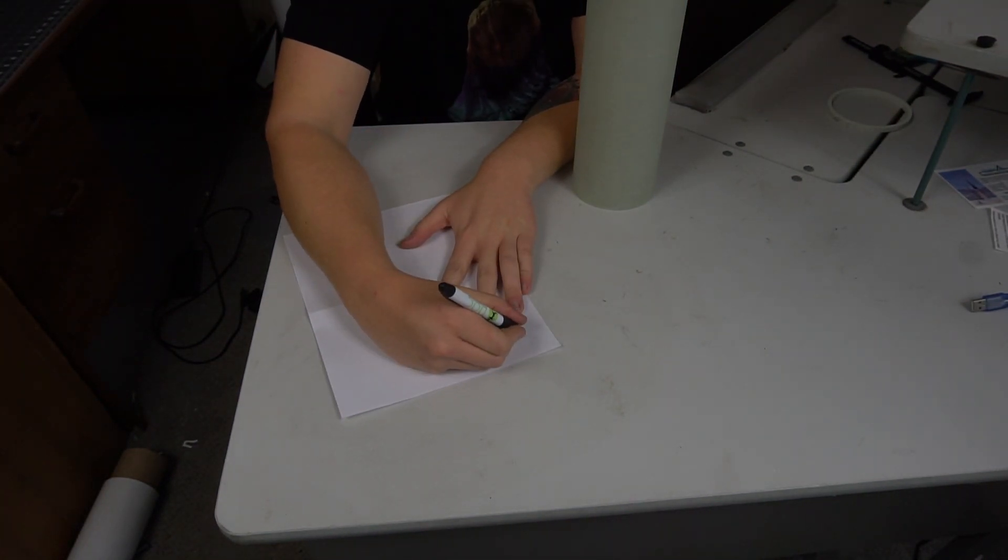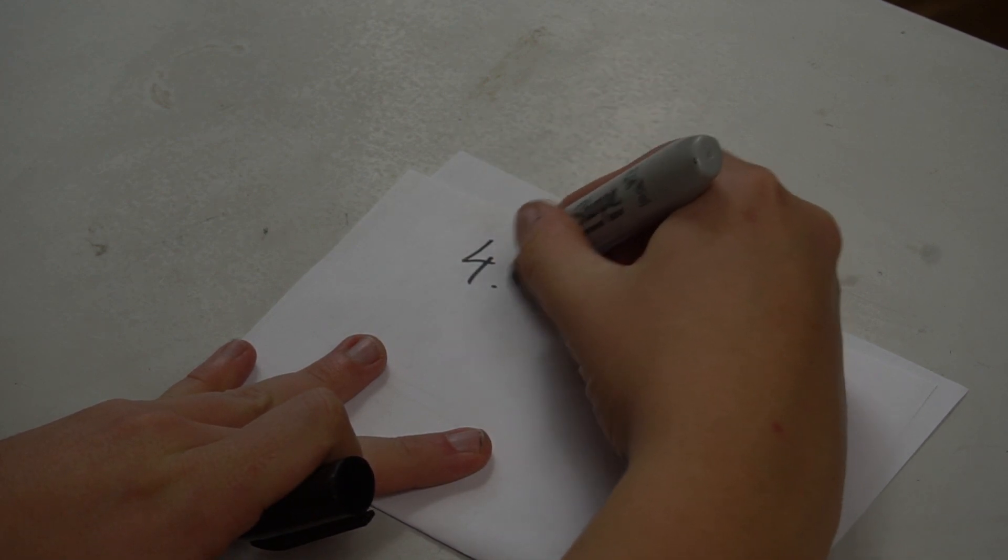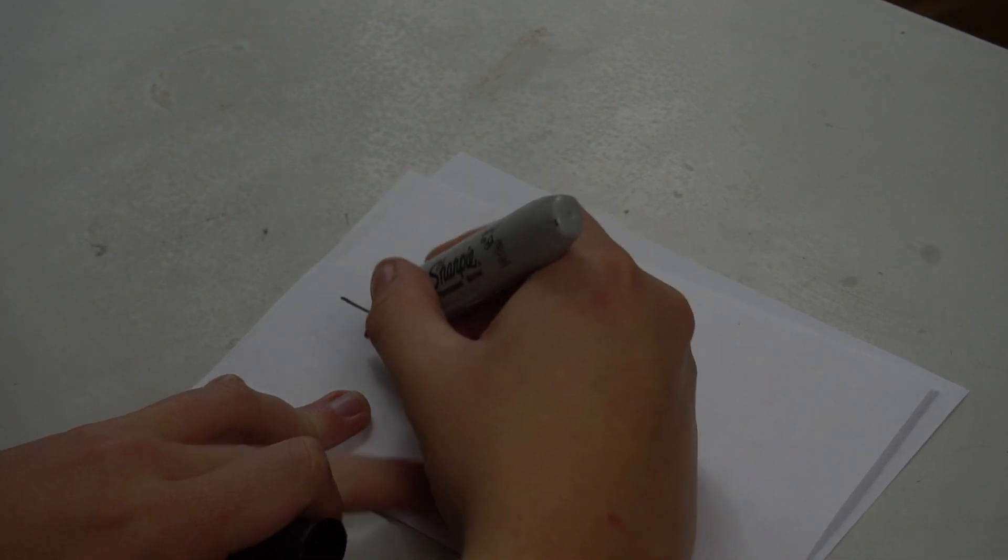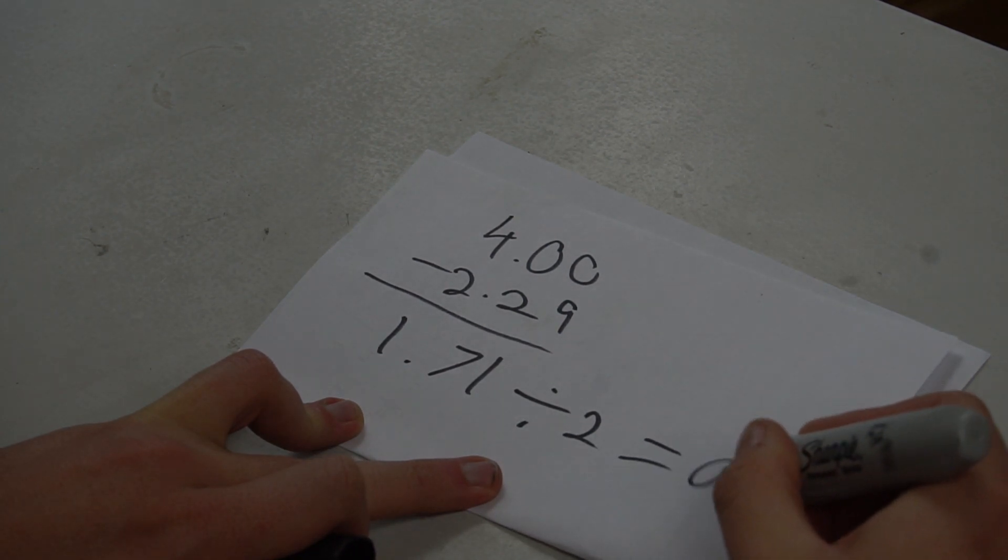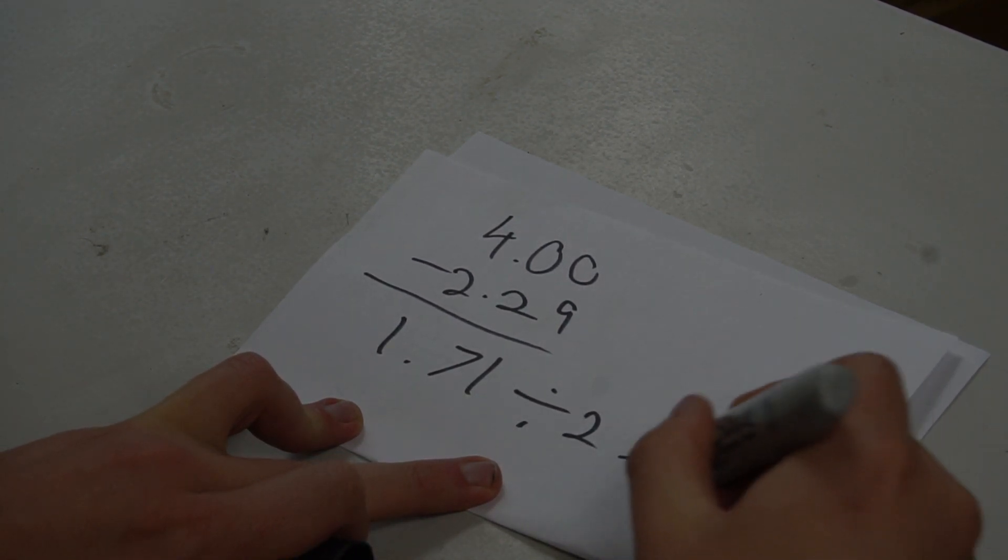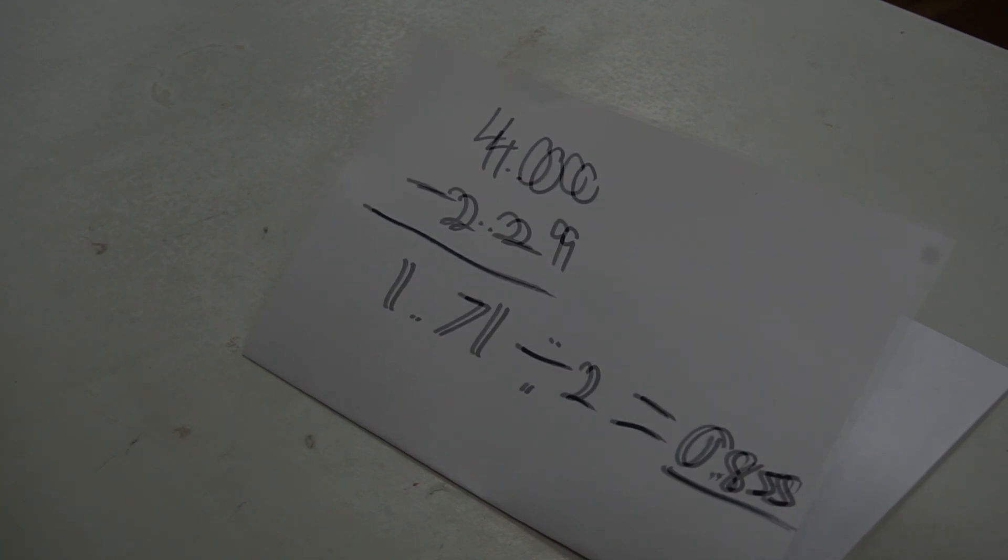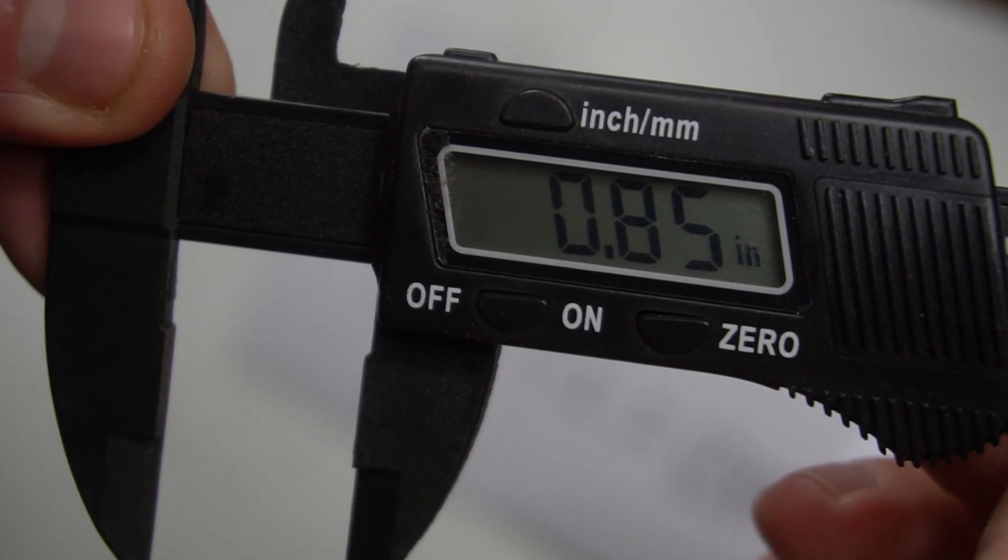Now it's time to do some real rocket science in the form of very simple arithmetic. We take the 4 inch outside diameter of the bigger motor tube, subtract the 2.29 inch outside diameter of the smaller motor tube, gives us a total of 1.71 inches divided by 2, that's 0.855. To give myself a little post-cut wiggle room, I set the calipers to 0.85, leaving that 0.007 inches sanding space, if you will.